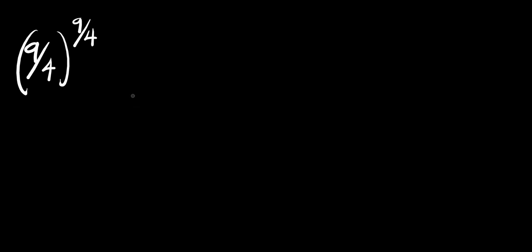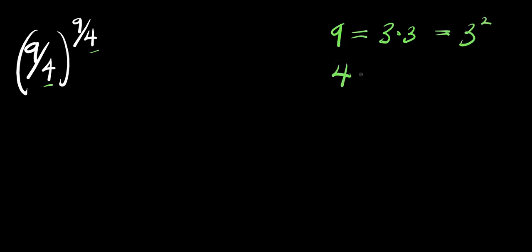Hello. How to evaluate with a calculator: this is 9 divided by 4, raised to the power of 9 divided by 4. Now, you know that 9 is a perfect square, which is 3 times 3, that is 3 to the power of 2. Also, 4 is a perfect square, which is 2 times 2, that is 2 to the power of 2.